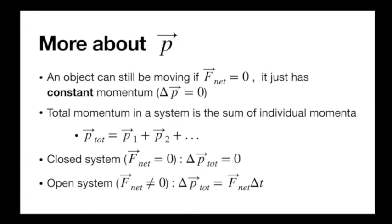For systems with more than one object — open or closed — we can define the total momentum as the sum of all the momenta of the objects in it. If the system is closed — no net external force — then P total must be constant; delta P total is zero. Objects can exchange momentum with each other, but the total stays constant because nothing is adding or subtracting from it. In an open system with a net force, the total momentum can change — the amount of change is exactly f net times delta t.